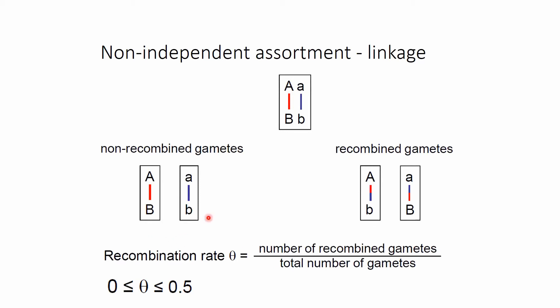We have non-recombinant gametes on one side and recombined gametes on the other side. In other words, when a recombination happened between these two loci, we have a different occurrence for these gametes.